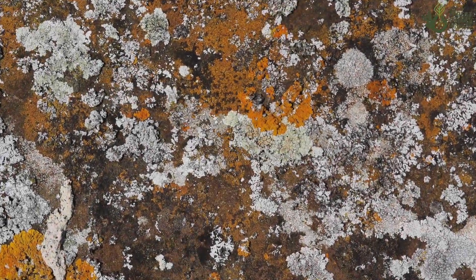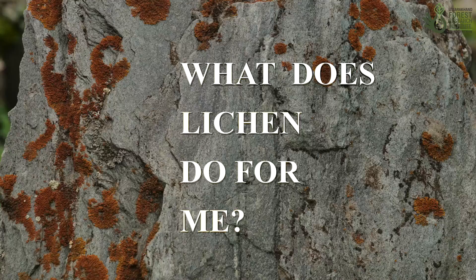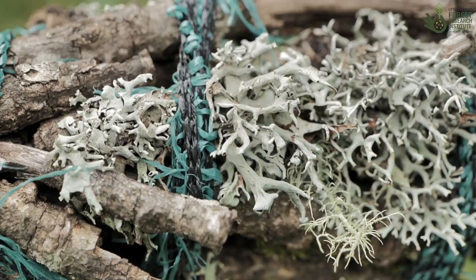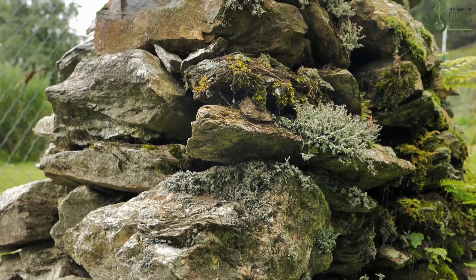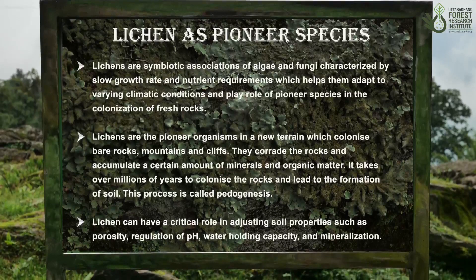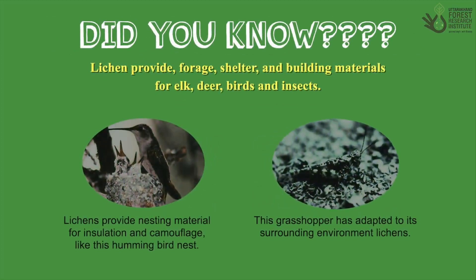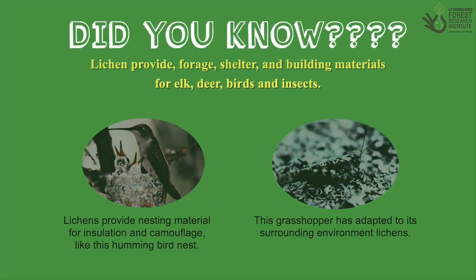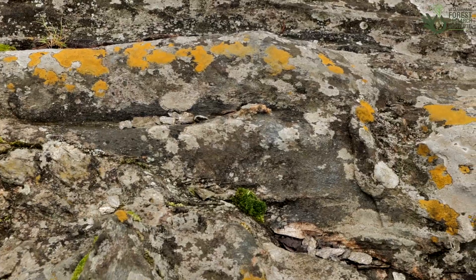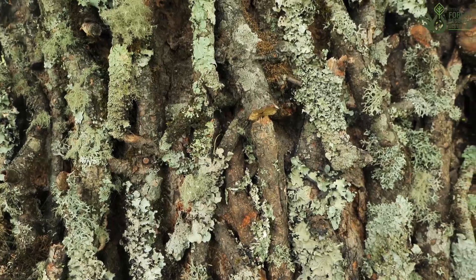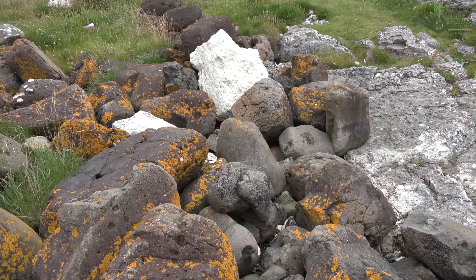Have you ever looked at a rock covered in lichen and thought, what does lichen do for me? Lichens are everywhere and they play an important role in our ecosystem. Lichens are typically the first organisms to colonize bare rocks. They provide habitat, food, and shelter for a whole array of organisms, and occur from high alpine elevations to sea level, growing on the barks of trees, walls, rocks, and soil.